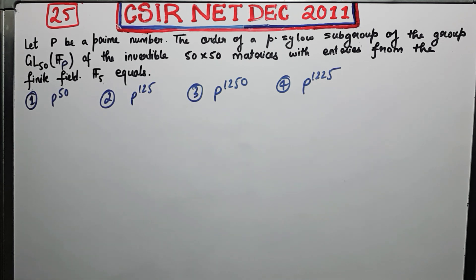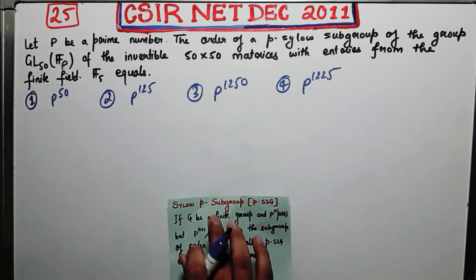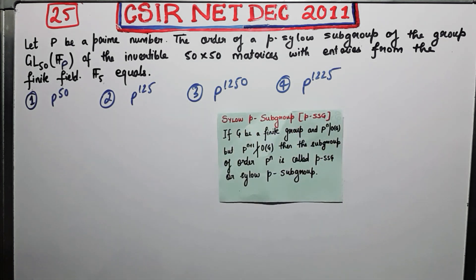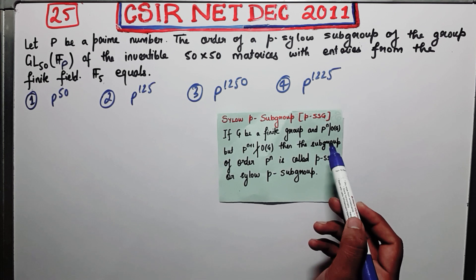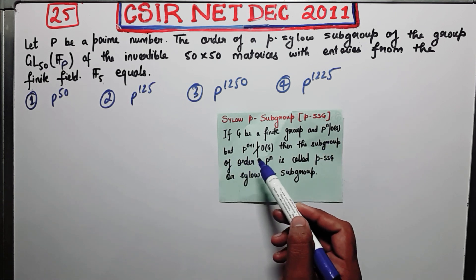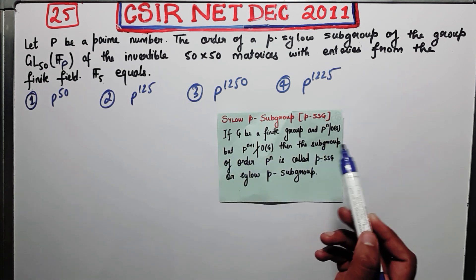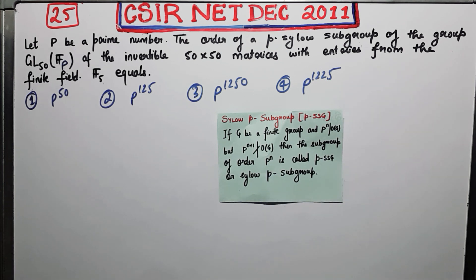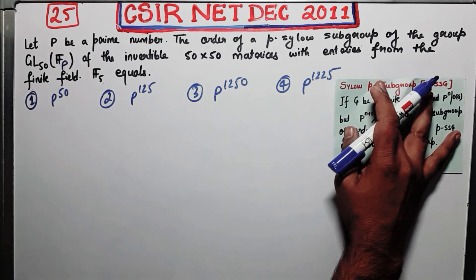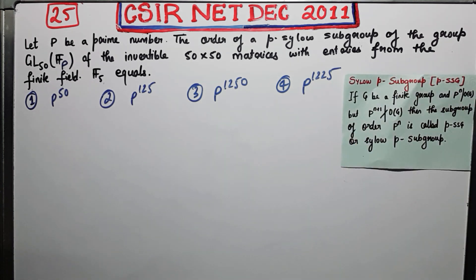This is the definition of the P-Sylow subgroup: if G is a finite group and P^n divides the order of G but P^(n+1) does not divide the order of G, then the subgroup of order P^n is called the P-Sylow subgroup. So this is what you need to know about the P-Sylow subgroup. In this question you need to find the order of the P-Sylow subgroup.